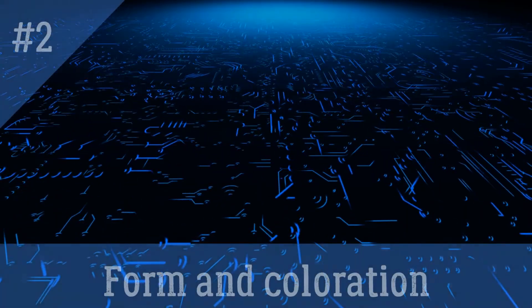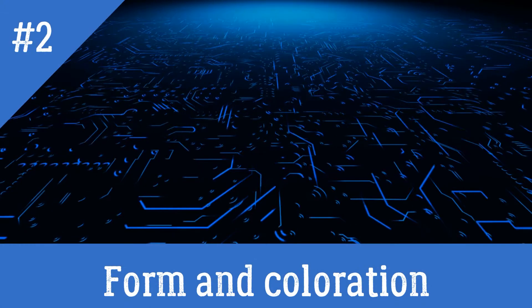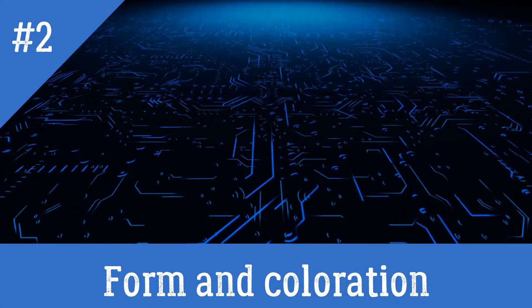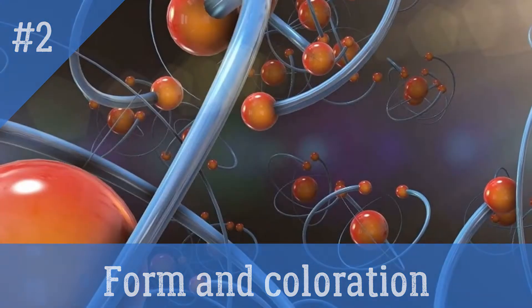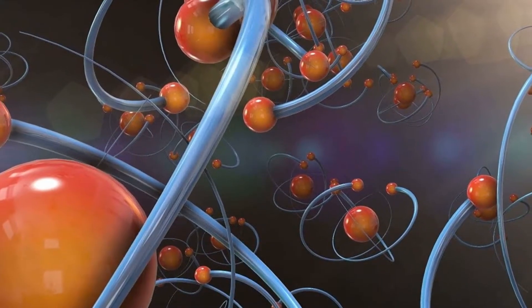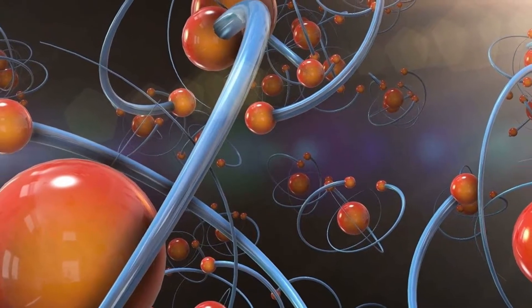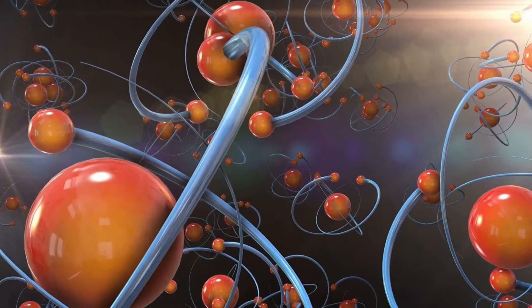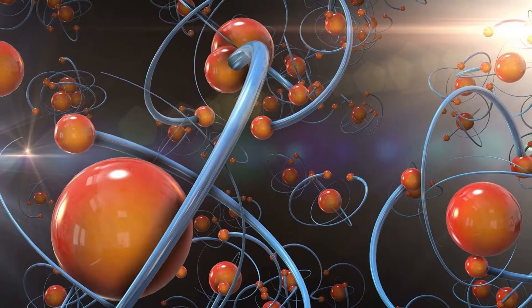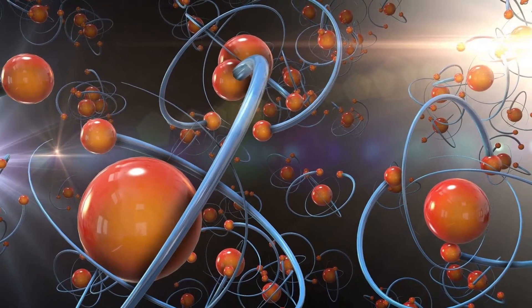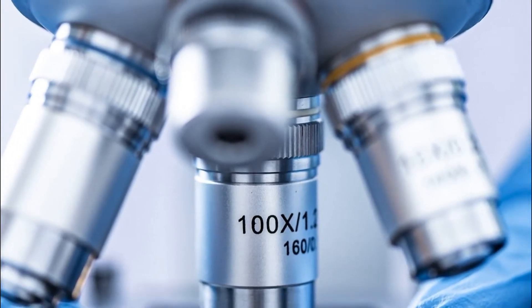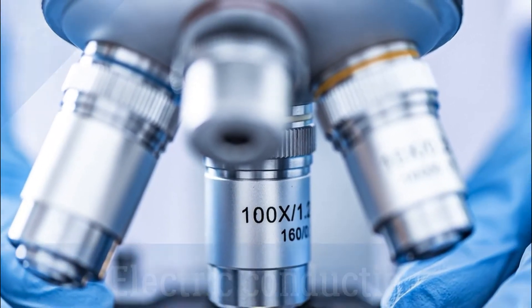2. Form and coloration: The metalloids are varied in their shape and color. They can be bright or opaque, and many of them have more than one allotropic state — that is, different presentations according to their molecular structure. Arsenic, for example, can be gray, yellow or black depending on its allotropic version. Silicon, similarly, can appear as a shiny solid crystal or as an amorphous and brownish powder.